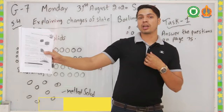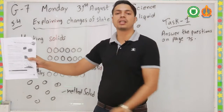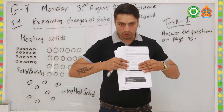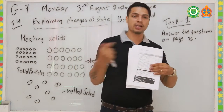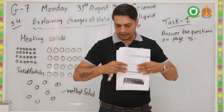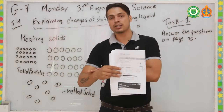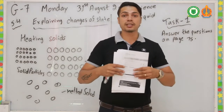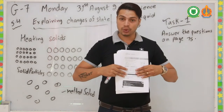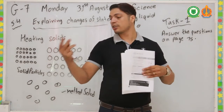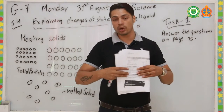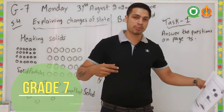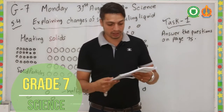Using the book analogy: my hand holding the book represents the attractive force, and the other hand represents heat energy pulling it away. When the heat energy is stronger than my attractive force, I can no longer hold the book — I let it go. That means there are no more attractive forces holding the particles together.